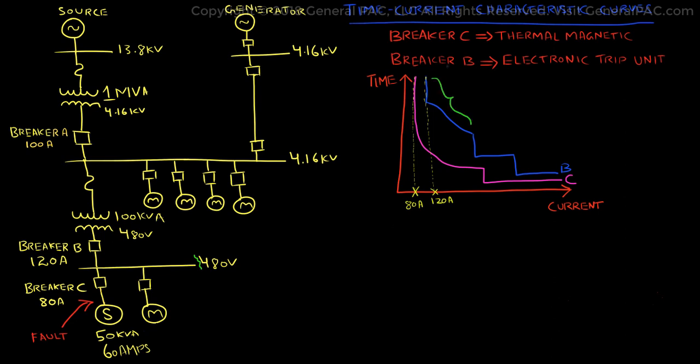For an electronic trip unit, there is a long-time region which starts from the pickup amp value. This region includes protection against overloads. The pickup starts from 110 to 120% of the amp rating. There is an adjustable time delay, after which it enters the short-time region.